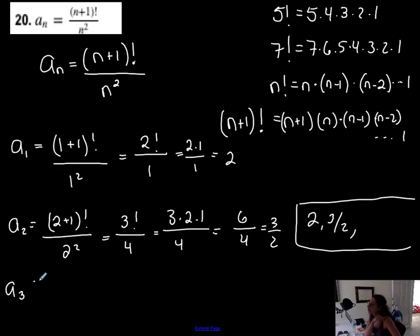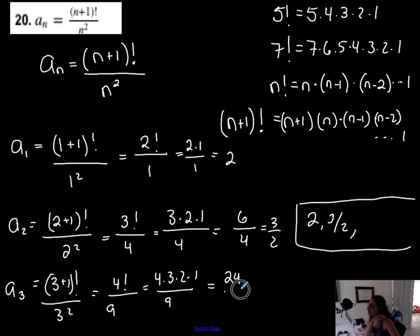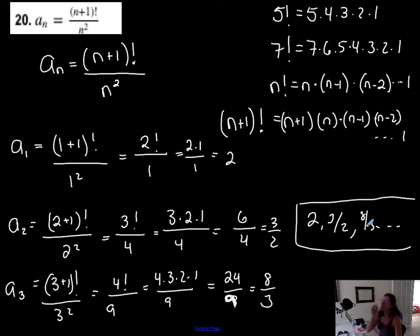One more: three plus one is four factorial over three squared — four factorial over nine. Four factorial is four times three times two times one, which is 24, divided by nine, which simplifies to eight thirds. And then it continues. I just wanted to show you factorial.